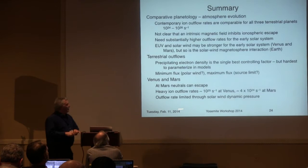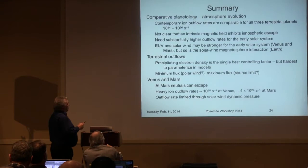So here's my summary: basically these rates are all the same. Does a magnetic field stop loss of an ion atmosphere, and therefore does it explain why the Earth is wet? I don't think so. I think we need to understand the early solar system much better. There are two effects that trade off: EUV goes up, ionosphere density goes up, but so does the solar wind, which enhances flux at unmagnetized planets but also increases interaction strength at magnetized planets. It's not clear how those two dials trade off.